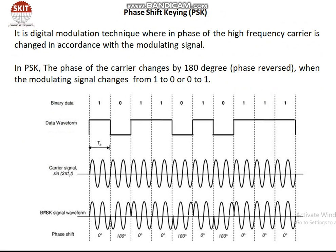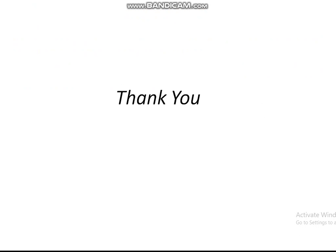In PSK (Phase Shift Keying), the phase of the carrier shifts according to binary 1 and 0. Whenever the signal shifts from 1 to 0 or 0 to 1, there is a phase shift of 180 degrees — a phase reversal. As seen in the waveform, when the signal changes from binary 1 to 0 or 0 to 1, there is a shift in the phase of the carrier signal by 180 degrees — that is, the phase of the carrier is reversed.